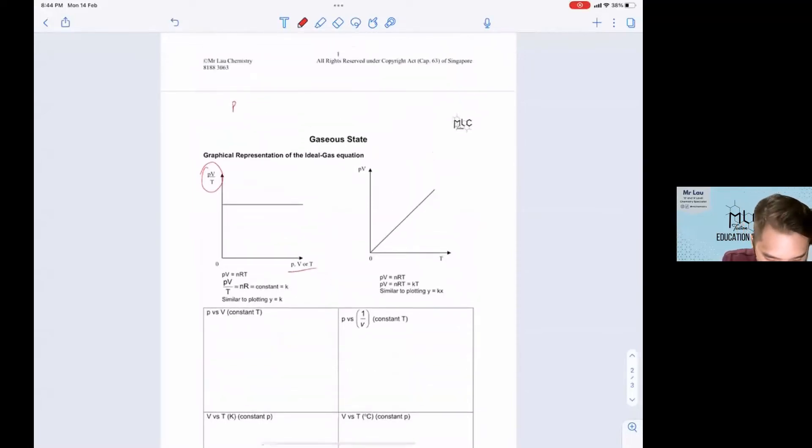First, make use of this equation PV equals nRT. Make sure that what's on the y-axis is on the left-hand side. So just bring it over to the left: PV over T equals nR. Since this is a constant, it means that PV over T equals a constant. Therefore, if you plot the x-axis as either PV or T, it will be a straight line.